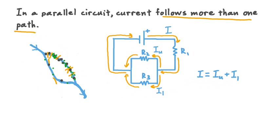Very briefly, if it did happen that R sub 2 was equal to R sub 3 — that is, the resistances of our parallel branches were identical — then the current would divide evenly across these branches. In other words, I sub U would be equal to I sub L. So that's a bit about current in parallel circuits. Now let's move on to talking about resistance in these circuits.